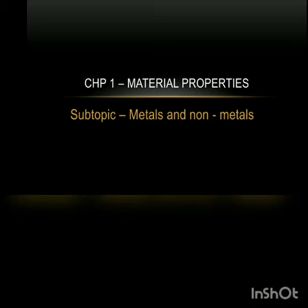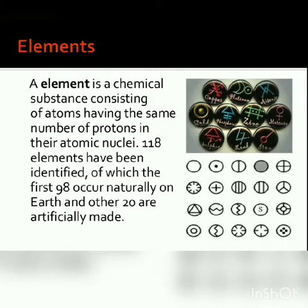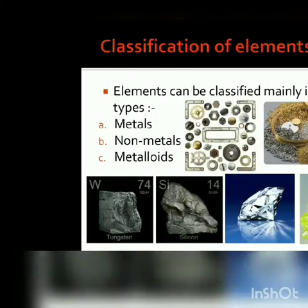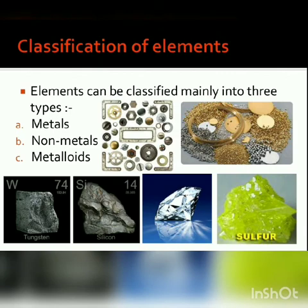Elements are chemical substances consisting of atoms having the same number of protons in the atomic nuclei. There are a total of 118 elements, out of which 98 occur naturally and 20 were artificially made. All these elements are placed and arranged in the modern periodic table.